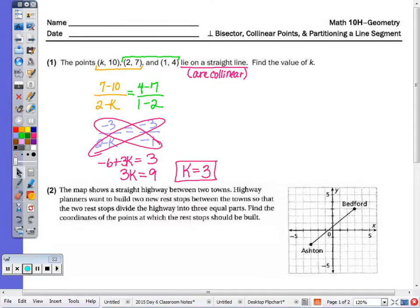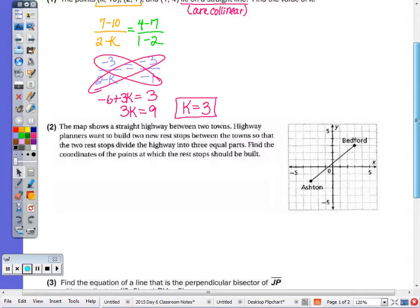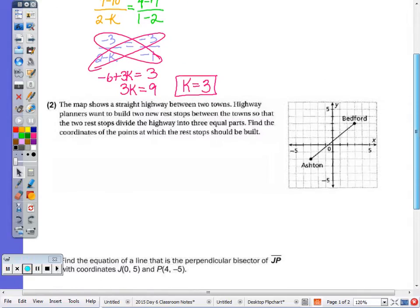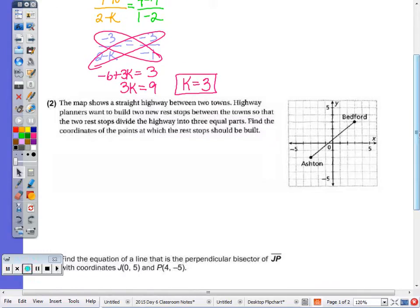Number 2. The map shows a straight highway between two towns. Highway planners want to build two new rest stops between the towns so that the two rest stops divide the highway into three equal parts. Find the coordinates of the point at which the rest stops should be built. So if you have a highlighter, we want to highlight that these rest stops are going to divide the highway into three equal parts or thirds.